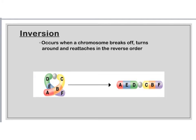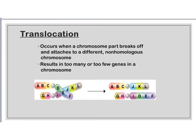An inversion occurs when a chromosome breaks off, turns around, and reattaches. These are usually fine — you still have your copy of the gene, it's just backwards. Translocation is when part of your chromosome breaks off and gets reattached onto a different chromosome. We usually see translocation in severe mutations or in something such as cancer.